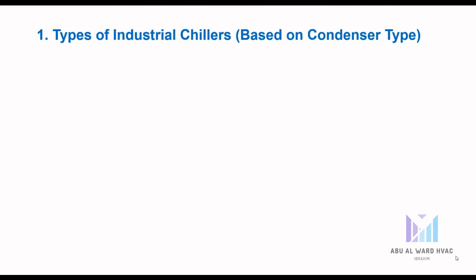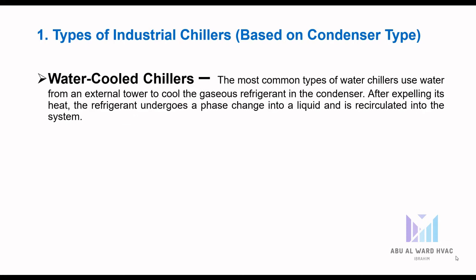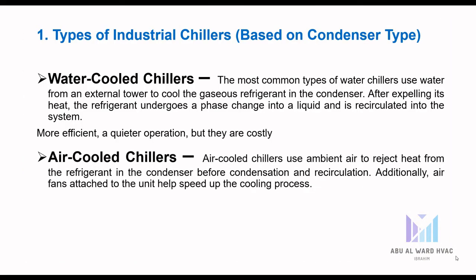Types of industrial chillers based on condenser type: water-cooled chillers are the most common type, using water from an external cooling tower to cool the gaseous refrigerant in the condenser. After expelling heat, the refrigerant undergoes a phase change to liquid and is recirculated. These are more efficient but more costly. Air-cooled chillers use ambient air to reject heat from the refrigerant in the condenser, with fans to speed up cooling. They are cheaper than water-cooled but noisier.